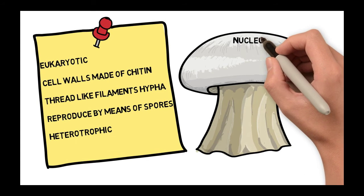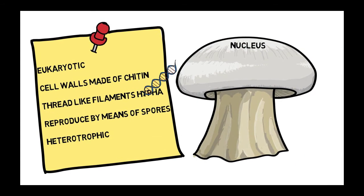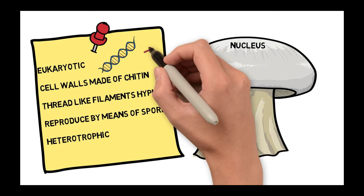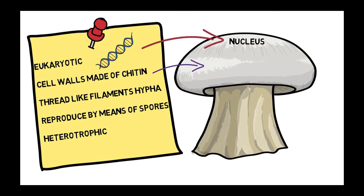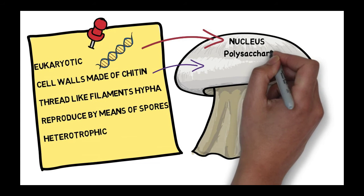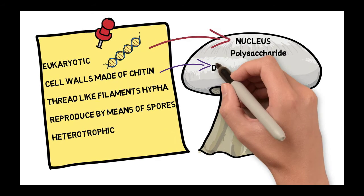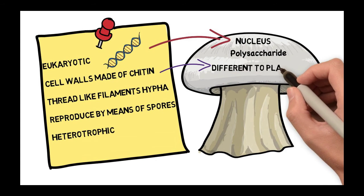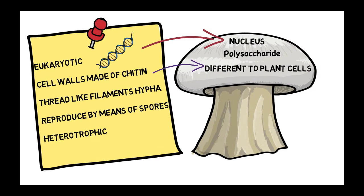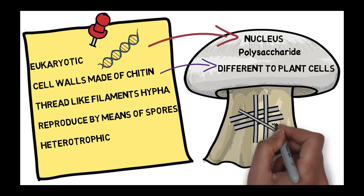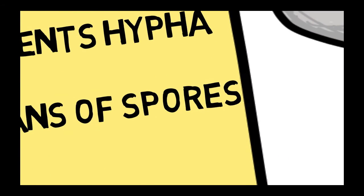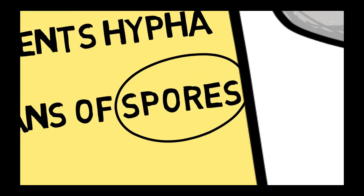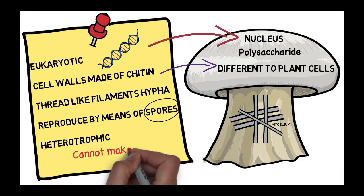Fungi are eukaryotic, meaning their cells contain a true membrane-bound nucleus. Fungal cell walls are made of the polysaccharide chitin, which is very different from plant cell walls made of cellulose. Some fungi produce thread-like filaments known as hyphae, and a visible mass of these is known as a mycelium. Fungi reproduce by means of spores, but cannot make their own food, so they are heterotrophic.